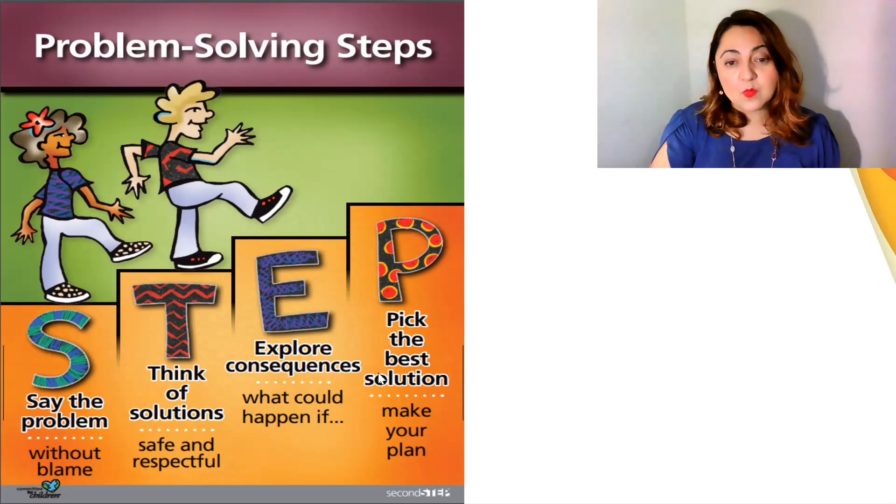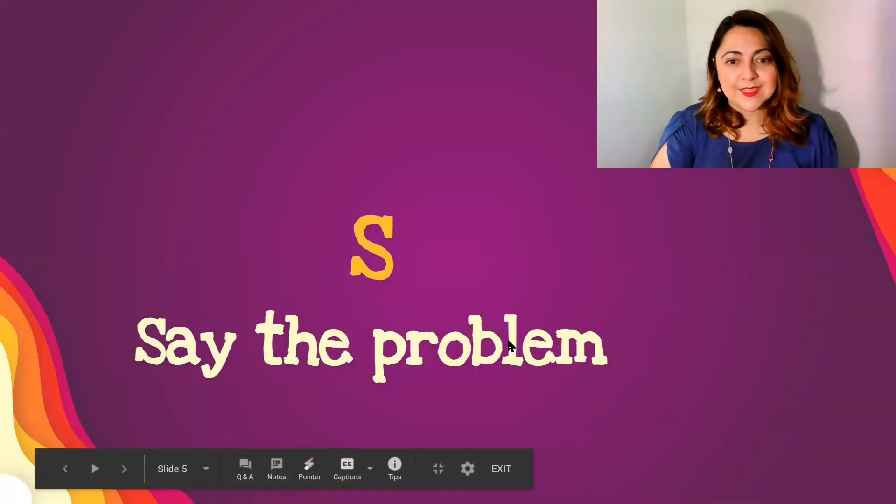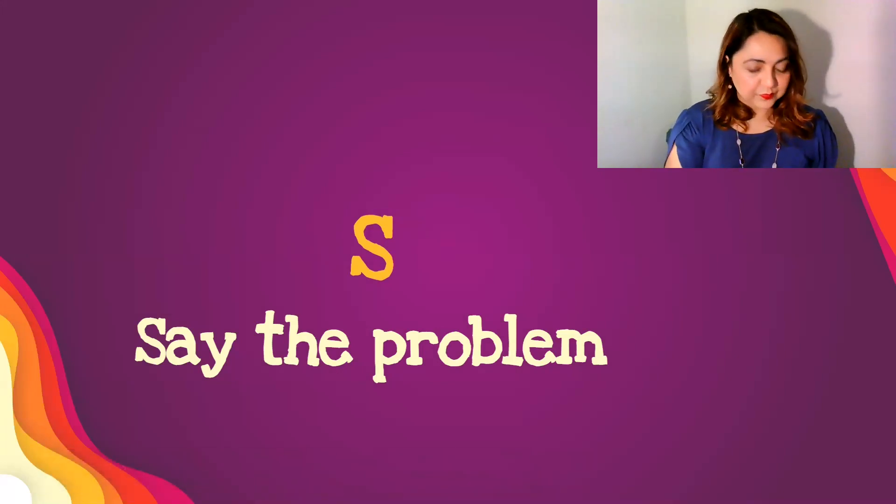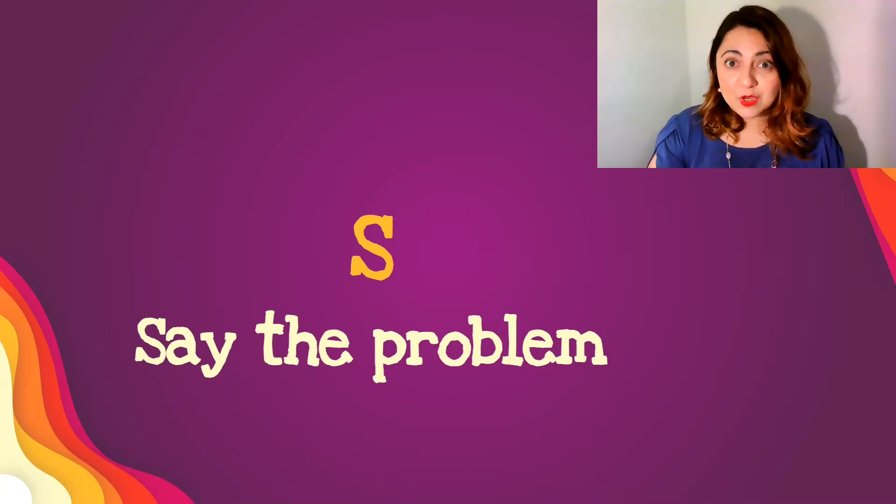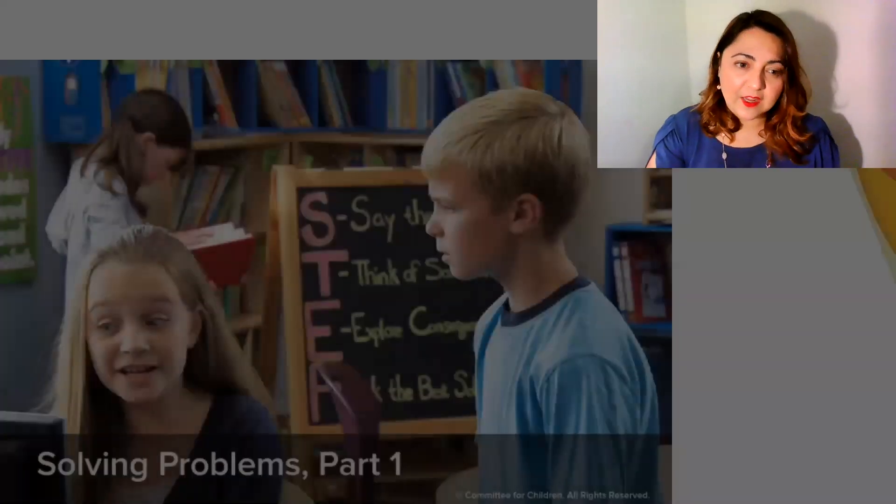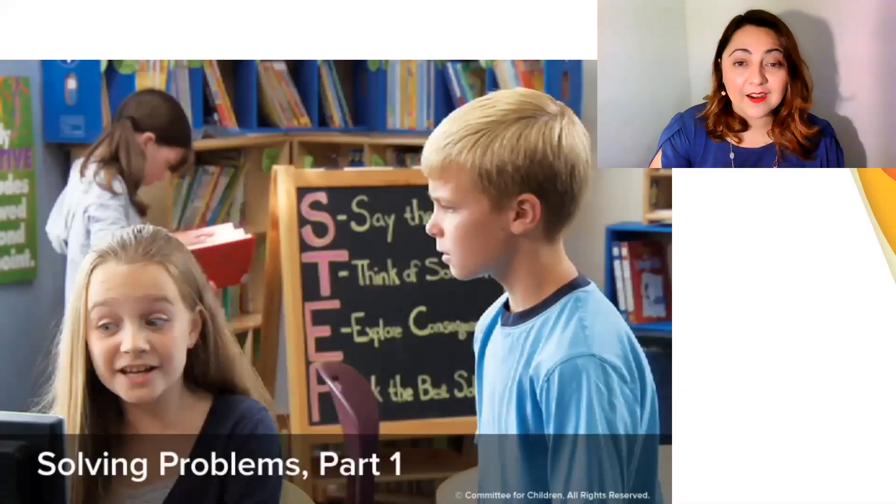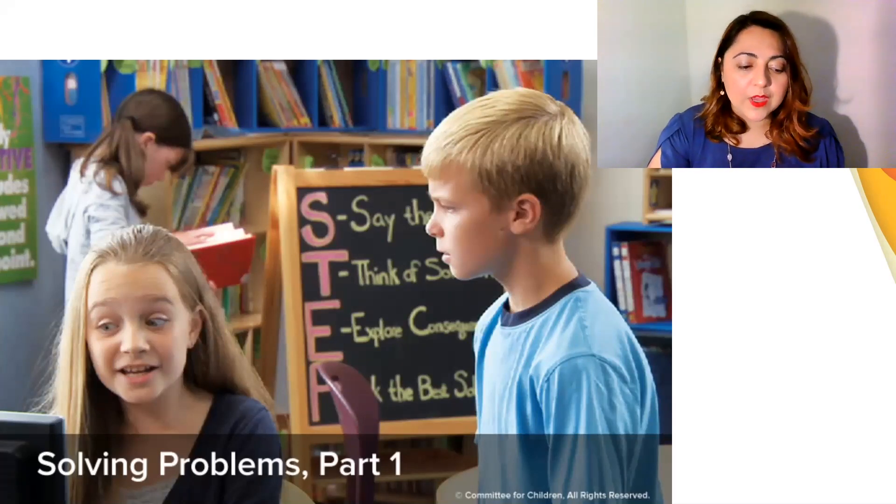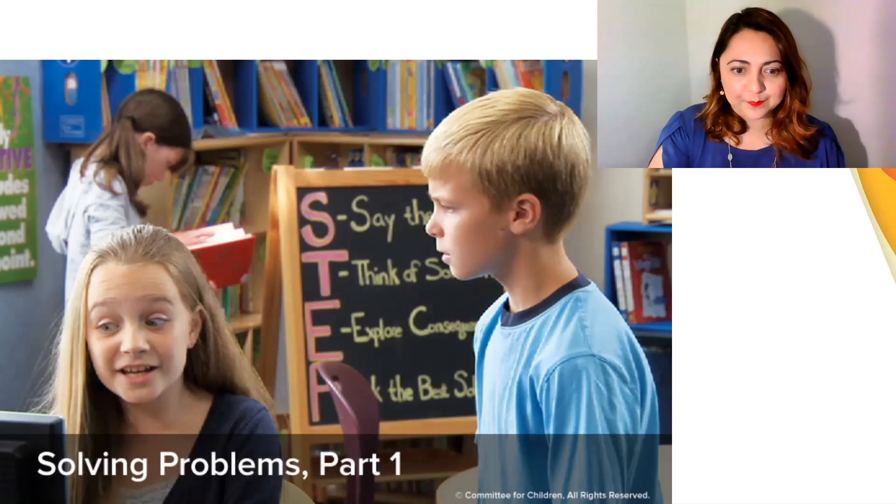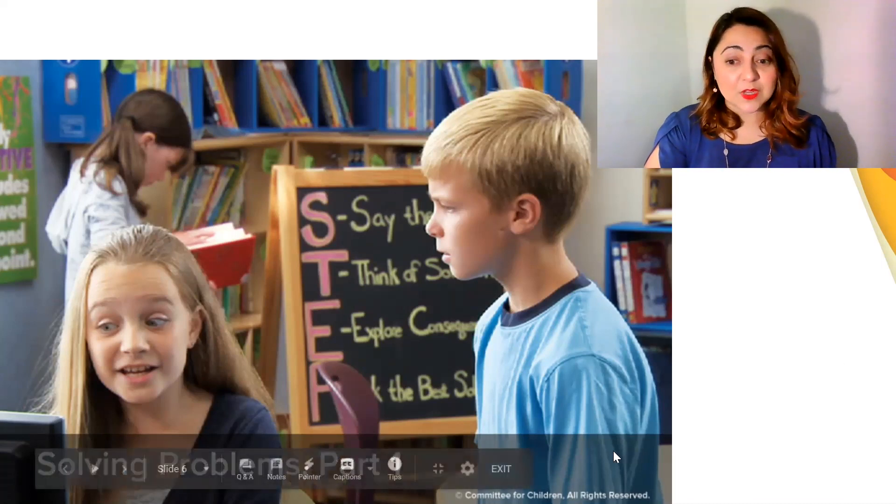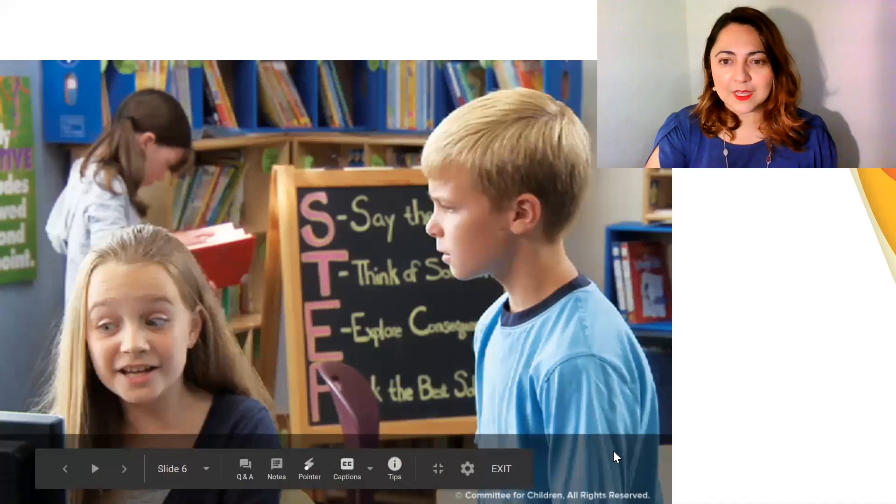Today, we're going to practice the first step, the S, to say the problem. And it's not just to say the problem, it's to say the problem without blaming anyone. So I'm going to show you a video. In this video, Emma and James are having a problem. I want you to watch and listen carefully for a way for them to say the problem without blame. So let's watch the video.